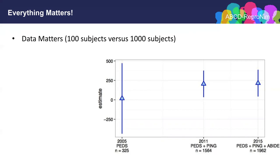Come 2011, the PING data becomes released. PING is the Pediatric Imaging, Neurocognition, and Genetics study, which had about 1,200 subjects. When you pool this with the PEDS data and begin to look at the sex effect of hippocampal volume, you begin to see a significant effect. And then later on when ABIDE and other resources become available and you add this data, the sex effect begins to stabilize and stay significant. It's not that the sex effect wasn't present in the PEDS data — it's just that it was a small enough number of subjects to not really be able to detect the presence of that effect significantly.